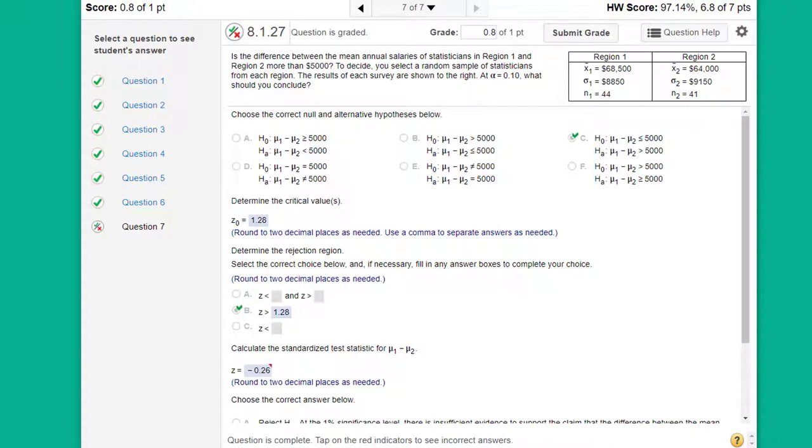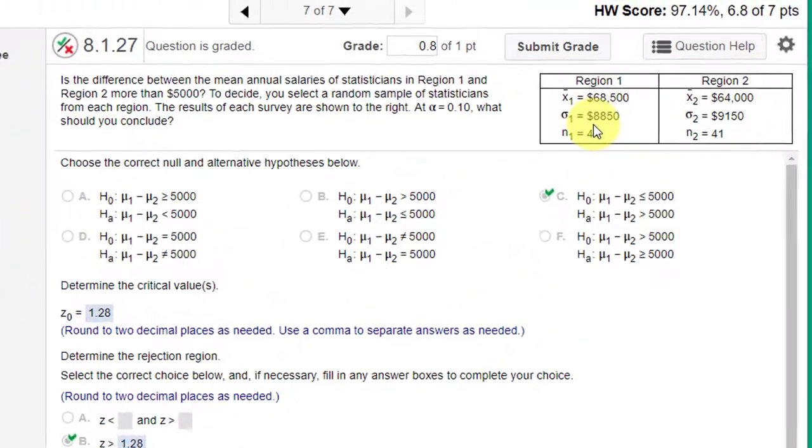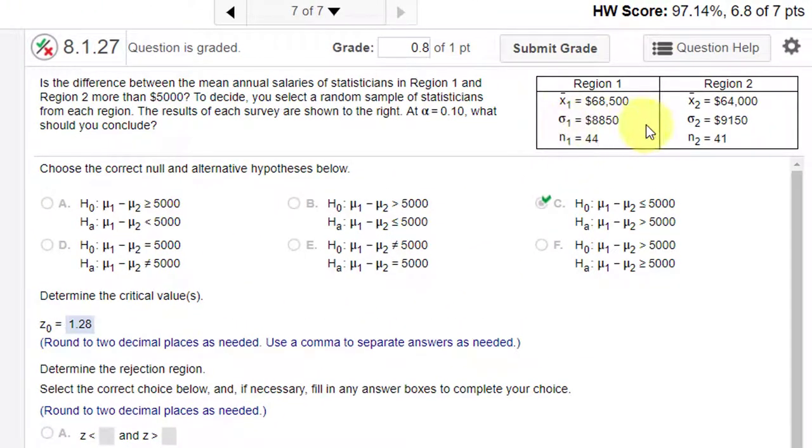These are two sample tests, and in this particular problem, we're given some summary data. I notice we're given the population standard deviations, sigma 1 and sigma 2. So that's a clue. Whenever you have sigma, the population standard deviation, whether it's a one sample or a two sample, you use the Z test. Here we're going to use the Z test to see if the population means are different.